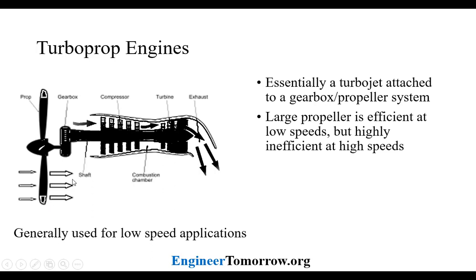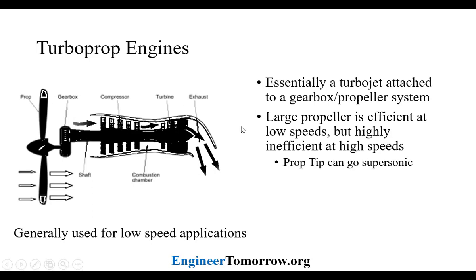The reason that the turboprop is used at low speeds is because of this giant propeller. As the propeller rotates, the parts at the extreme tip are moving at a much higher speed than those near the center. The tips of the propeller could actually go supersonic, which introduces a lot of inefficiencies in operation at high speeds. As you increase the airflow speed and have a higher velocity tip, that produces a lot of losses due to shocks. So generally, the prop tip going supersonic reduces efficiencies.